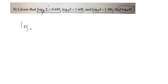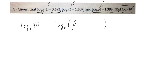The trick is to re-express 40 as a product of those numbers, using any combination of them. This one looks like you could just multiply 2 times 5 times 4 — that's 40, right?